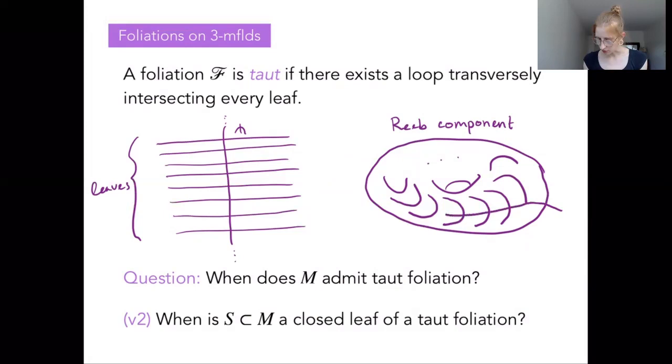But when it intersects our planes, it still has to be transverse. And so it sort of gets directed towards the middle, the core of the solid torus, and it wraps around here, and it keeps wrapping. And there's really no way for it to escape. It's just stuck. So this sort of acts as a dead end, preventing you from finding this transverse closed loop.